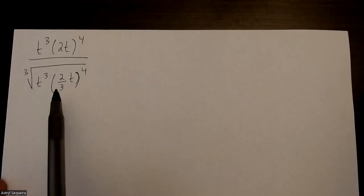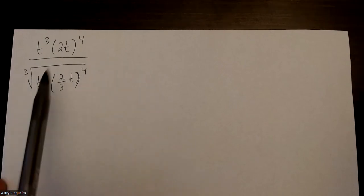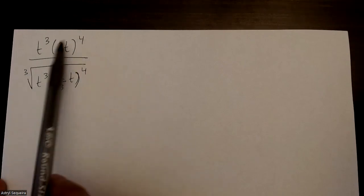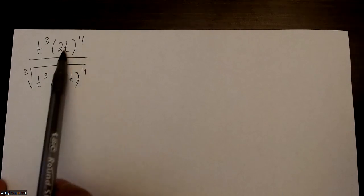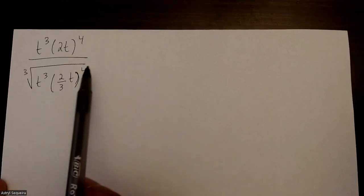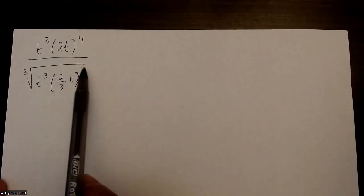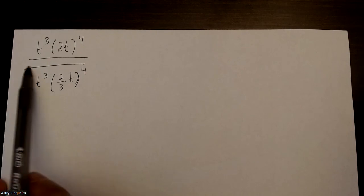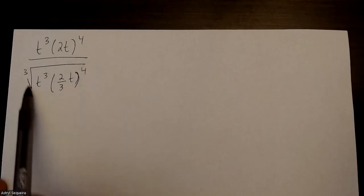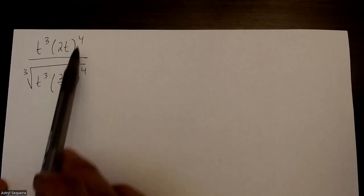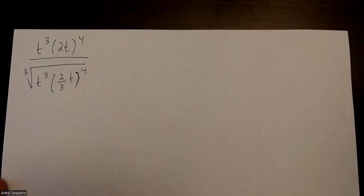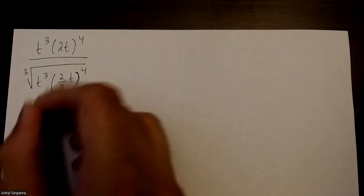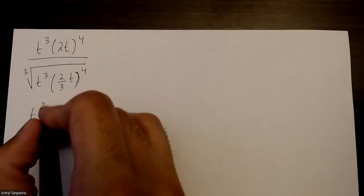So how to solve this equation — there are a couple of things I can do in my first step. I can start by distributing this 4 into this bracket and also distribute this 4 into this one. I can also change this into an exponent as well. Let's start with doing that.